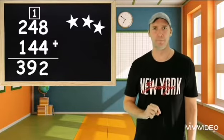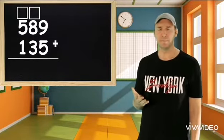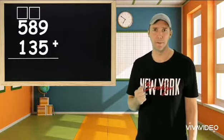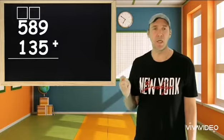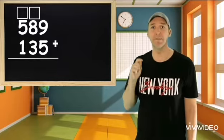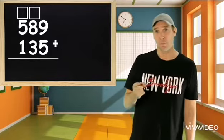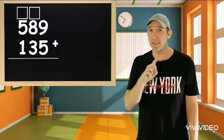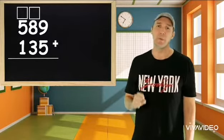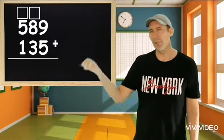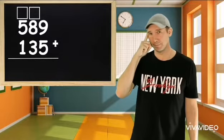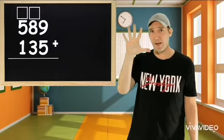Let's do one more. This one we have a big number. Five hundred eighty-nine plus one hundred and thirty-five. So we start in what place? In the ones place. We have nine plus five. So I put nine in my head. Nine. And I'm gonna count on five.